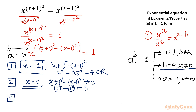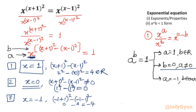Case 3: base equals -1, so x = -1. We need the exponent to be even. Checking (-1+1)² - (-1-1)² = 0² - (-2)² = 0 - 4 = -4, and -4 is even. Therefore x = -1 is also a true solution.